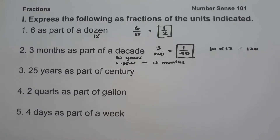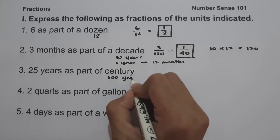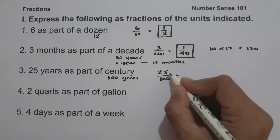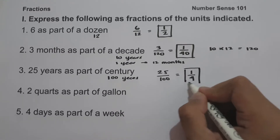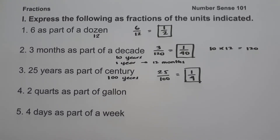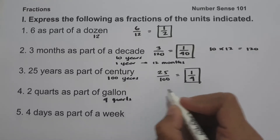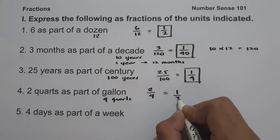On number 3, we have 25 years as part of a century. A century means 100 years, so this is 25 over 100. Since 25 and 100 are divisible by 25, this simplifies to 1 over 4. On number 4, we have 2 quarts as part of a gallon. There are 4 quarts in a gallon, so this is 2 over 4, or simply 1 half.